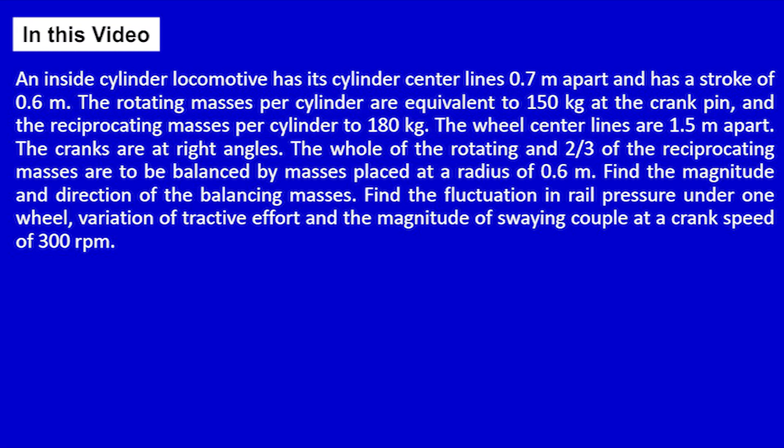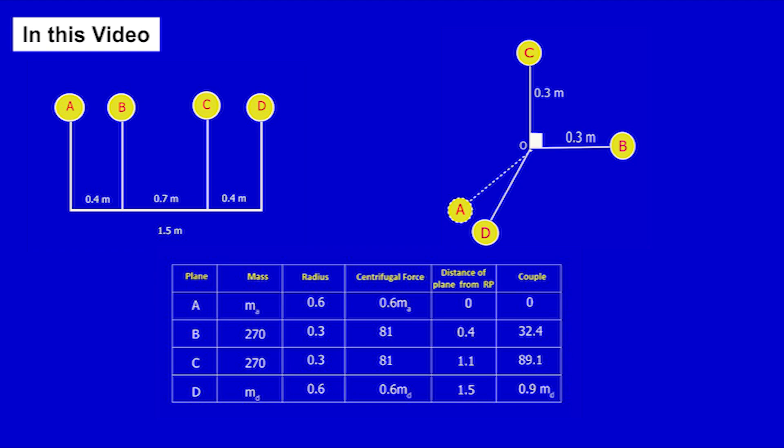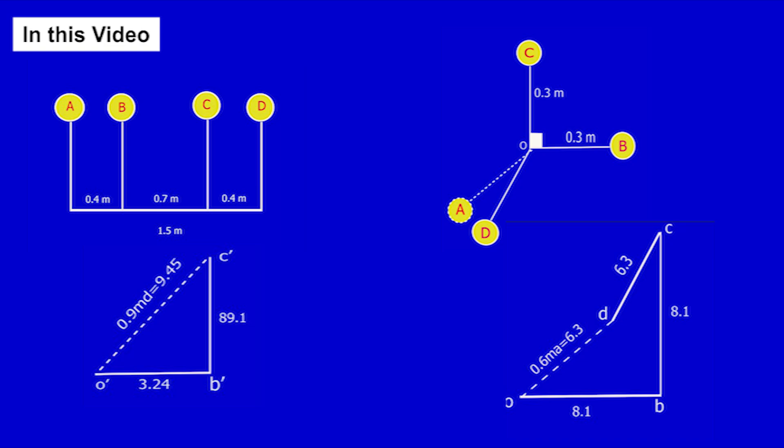In this video, I will demonstrate how to solve a problem related to balancing a reciprocating mass on a shaft. First, I will draw the displacement diagram. Then I will create an angular diagram. Next, I will calculate the data in table form. Finally, I will construct a couple polygon and force polygon to find the magnitude and orientation of mass A and D.